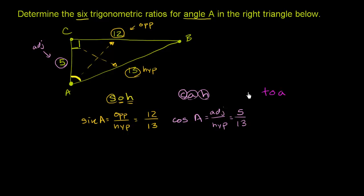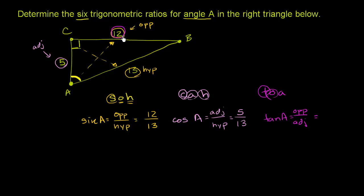Now let's go to TOA. TOA defines tangent for us: the tangent of an angle is equal to the opposite side over the adjacent side. So what is the tangent of A? The opposite side has length 12, and the adjacent side has length 5. So the tangent of A — opposite over adjacent — is 12 fifths.